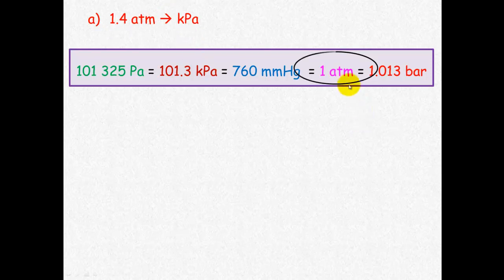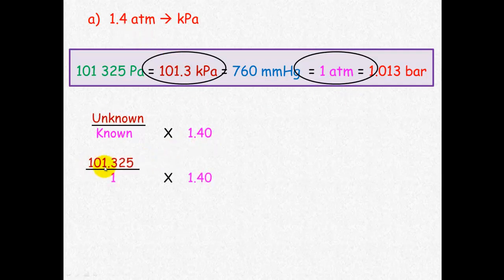To convert atmospheres into kilopascals, we look at unknown over known. Unknown over known times the information we've got equals 101.325 kilopascals—our unknown—divided by 1 atmosphere, which is our known. That's our ratio times 1.4, and we get 142 kilopascals.